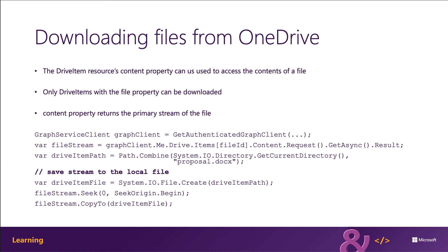After first getting an authenticated graph client, you get a stream of data coming back from the content property, and then set up where that file is going to be stored — the drive item path on your local machine. Then you save the stream to the local file by creating the file and using the file stream to read the contents and copy it to the file on disk.